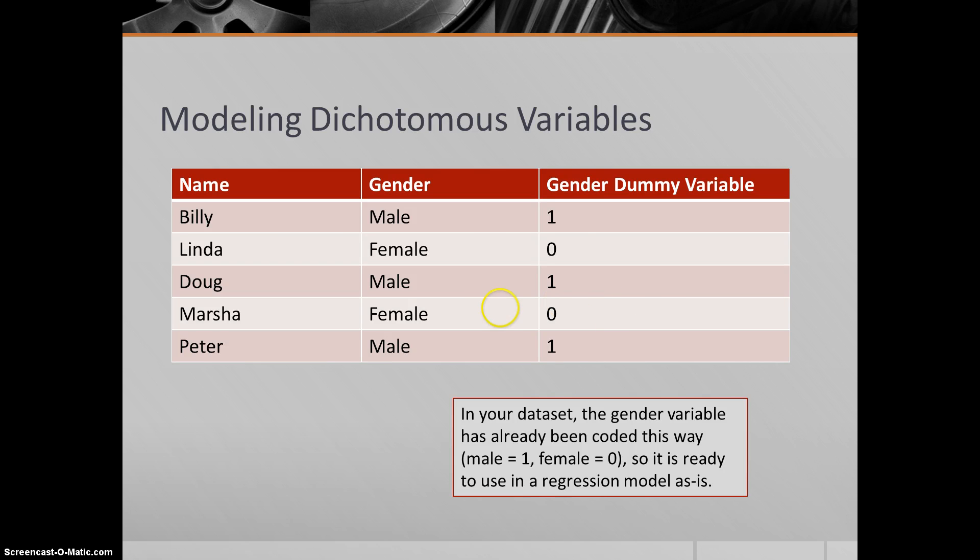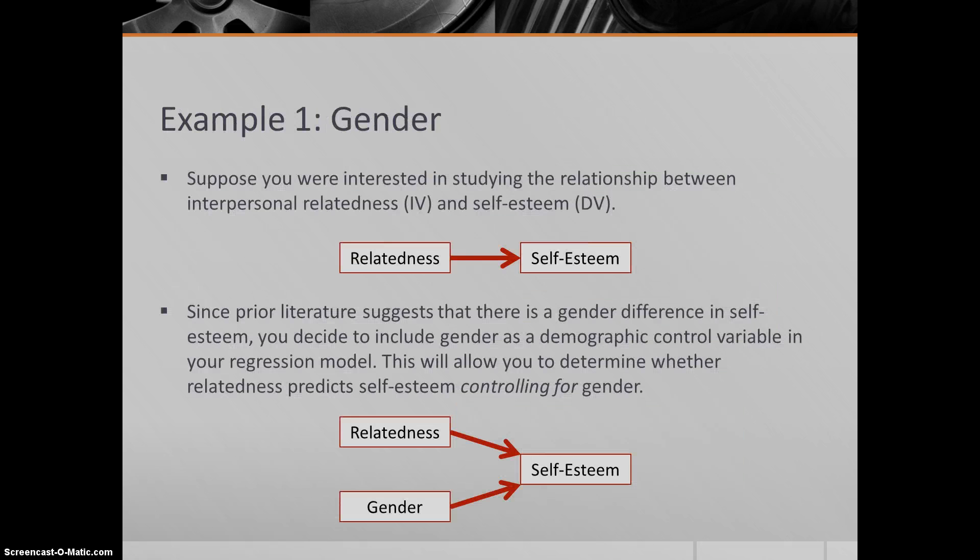However, perhaps if you had a data set where it had F and M - F for female and M for male - you would have to go into SPSS and change the F's and M's into zeros and ones before you could put it into your model. Let's take a look at an example. Suppose you were interested in studying the relationship between interpersonal relatedness and self-esteem. Interpersonal relatedness would be the independent variable, self-esteem would be the dependent variable. But imagine in the literature, prior literature, it says that there tend to be gender differences in self-esteem. Whether or not someone's male or female could also predict variation in self-esteem. So you decide to include gender as a demographic - participant backgrounds like gender, ethnicity, and age - a demographic control variable in your regression model.